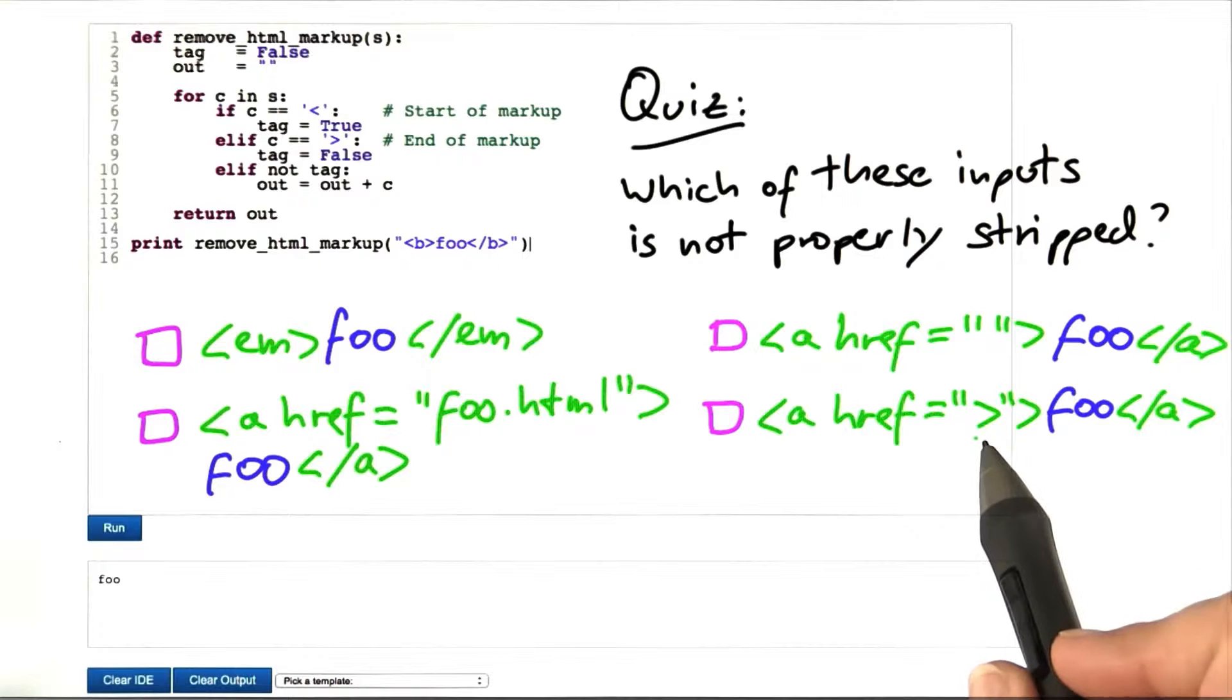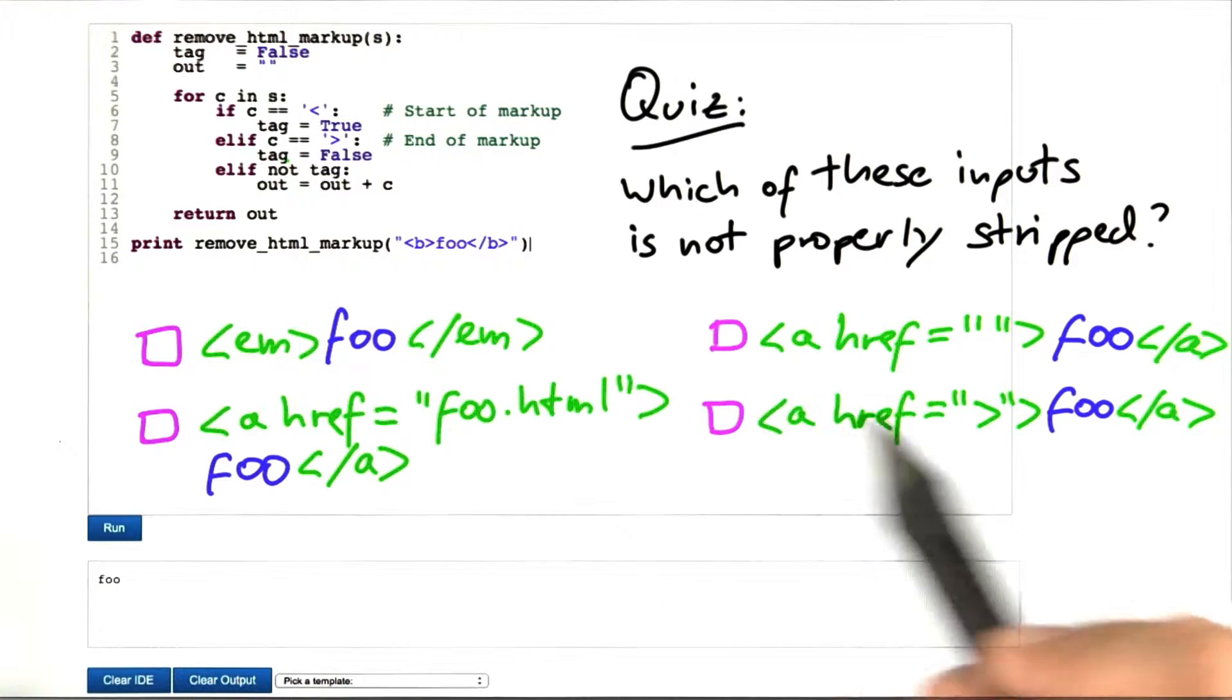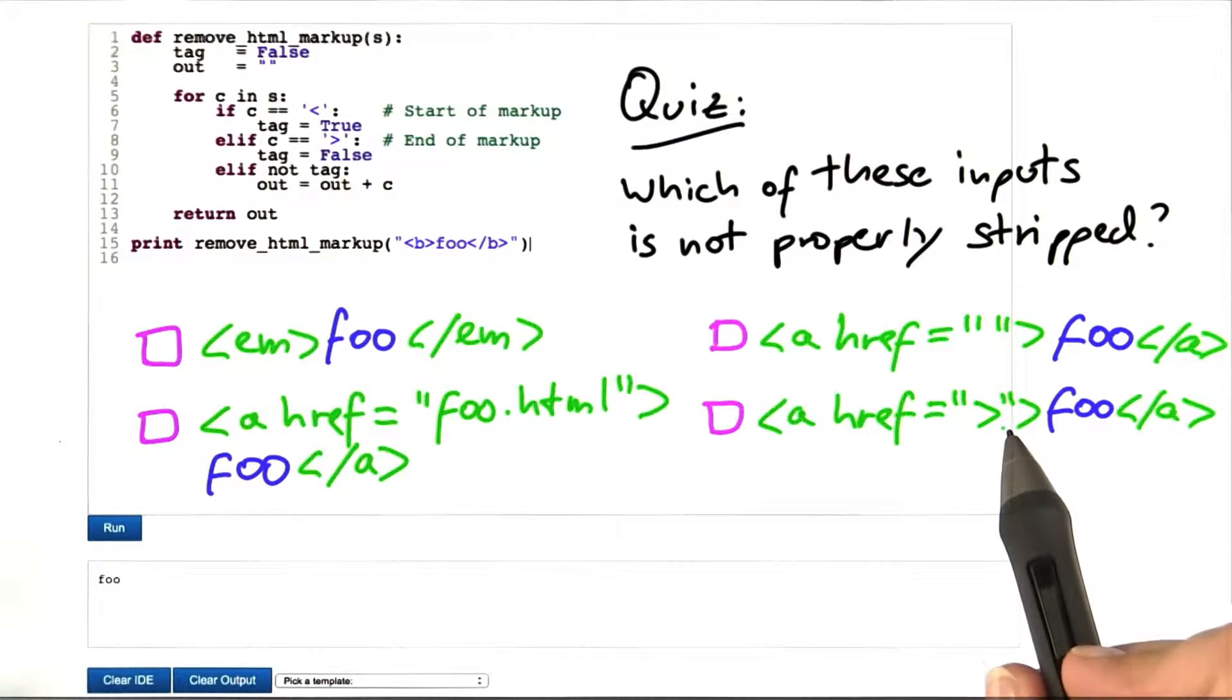What we have in here in our input is a character that can also be mistaken for the end of tag in HTML markup. Our program does not know about the special meaning of double quotes.